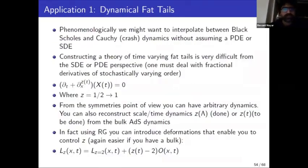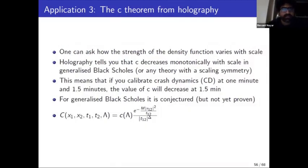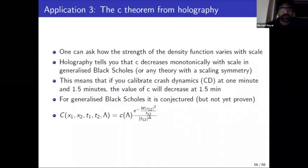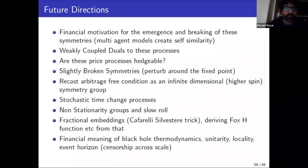Crashes happen rapidly and then subside slowly, and information flows from long to short time scales. There are other applications: bulk theories help you look at dynamical fractals, much harder to analyze using just boundary SDEs. You can try to reproduce volatility smiles or skews using RG-based methods, where the RG parameter is roughly the radial parameter in the holographic description. C-theorems give results that SDEs cannot — if you have two-point density functions with certain c-values and change the scale at which they've been calibrated, these c-functions will decrease with scale, and this is much easier to see using the bulk theory.